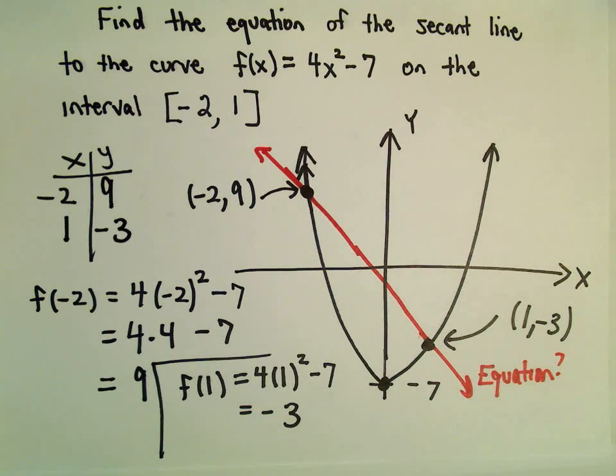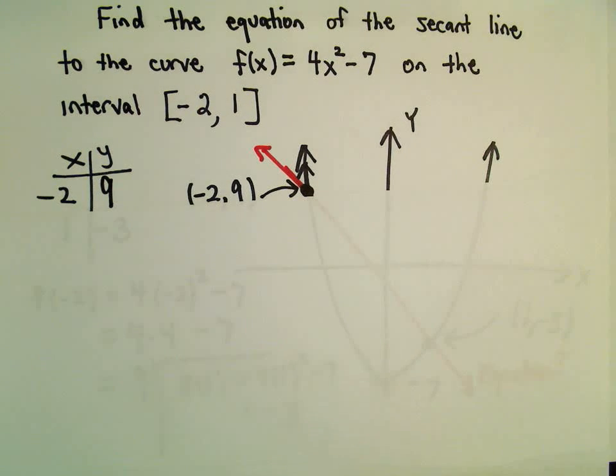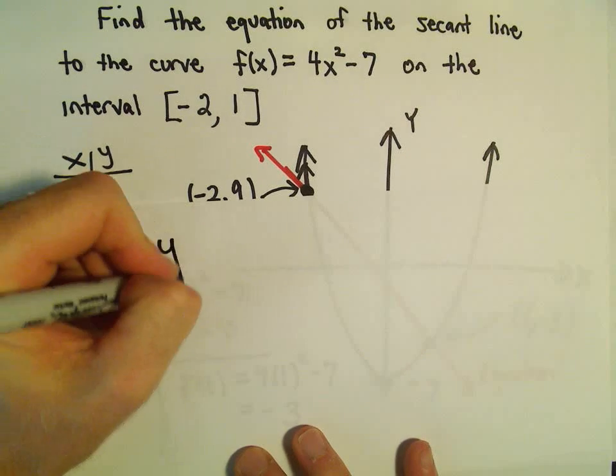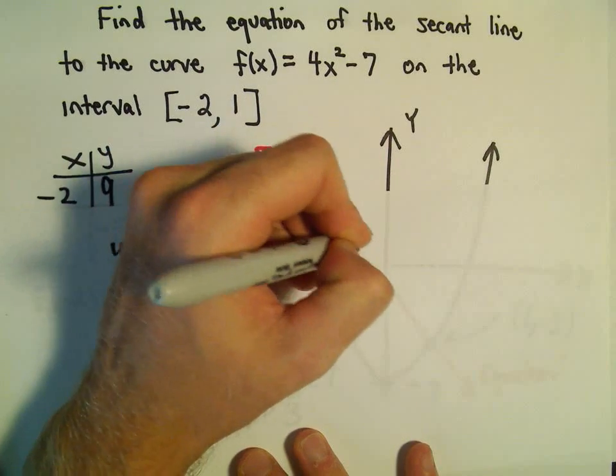Now this is just kind of old algebra stuff, just figuring out the equation of a line. So I'm going to use point-slope formula which says it's y - y₁ = m(x - x₁).